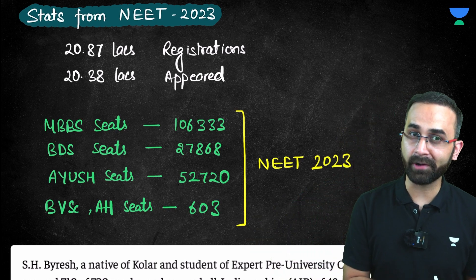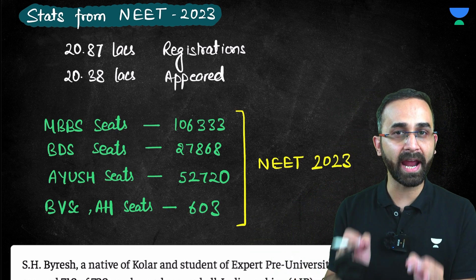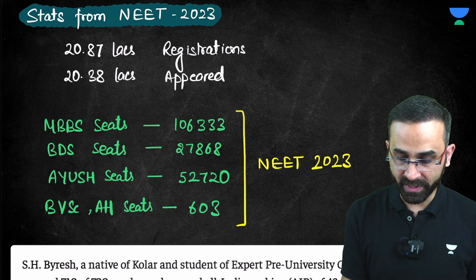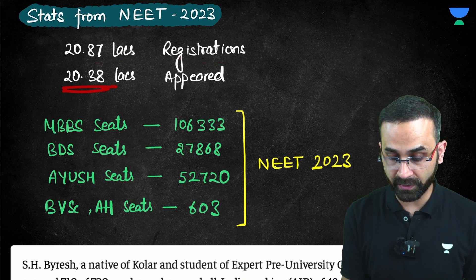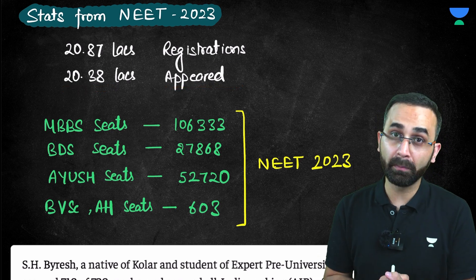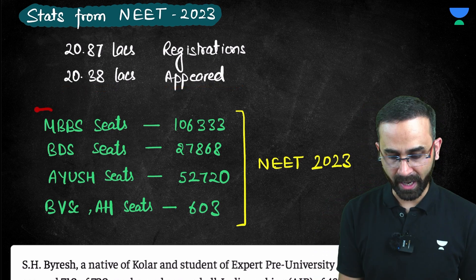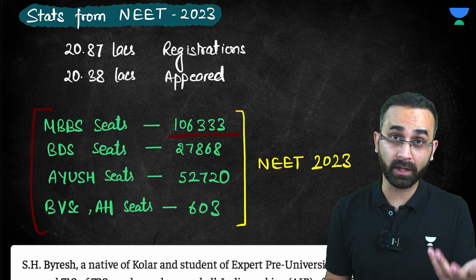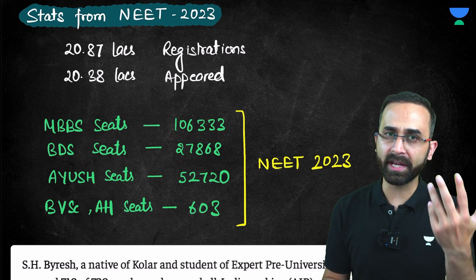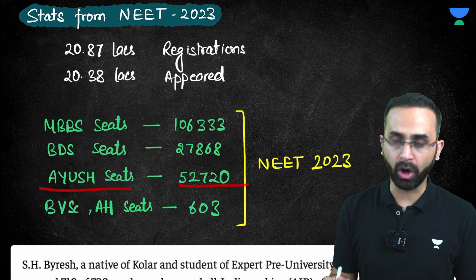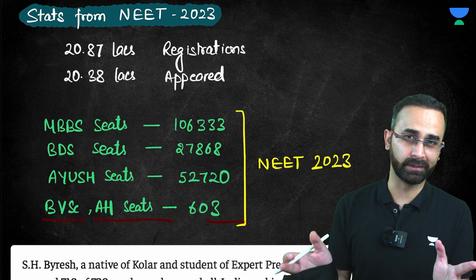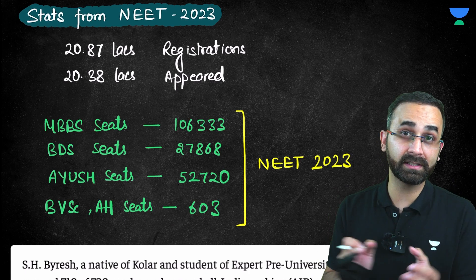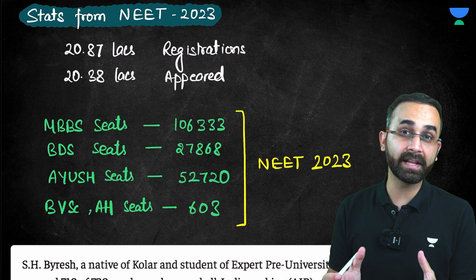Before we start discussing the strategy, here are some important stats from NEET 2023. 20.87 lakh registrations and out of that 20.38 lakh appeared. So that is your competition. And for how many seats? MBBS seats total 1 lakh 6,000, BDS seats almost 28,000, AYUSH seats almost 53,000, and BVSC or AF seats 600. These are the total seats that you are targeting under the NEET examination.